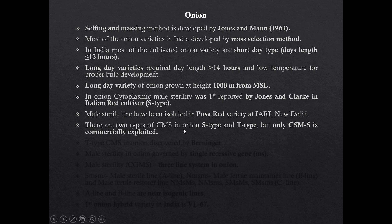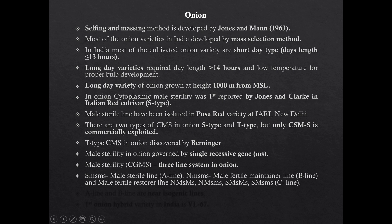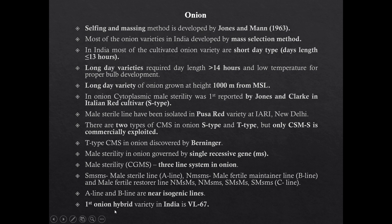There are two types of CMS in onion: S-type and T-type, but only CMS S-type is commercially used. T-type of CMS in onion was discovered by Berlinger. Male sterility in onion is governed by a single restorer gene. The male sterility system in onion is a three-line system, consisting of A-line, B-line, and C-line. A-line is the male sterile line, B-line is the maintainer line which is male fertile, and C-line is a male fertile restorer line different from A and B. A and B lines are near-isogenic lines. In India, the first onion hybrid variety is VL-67.